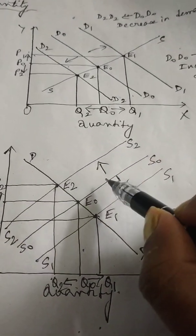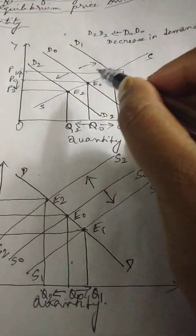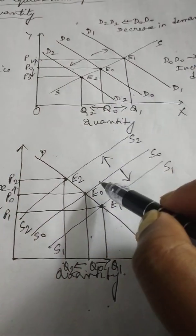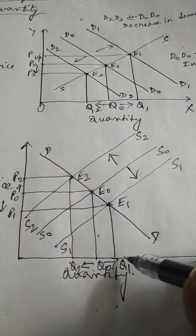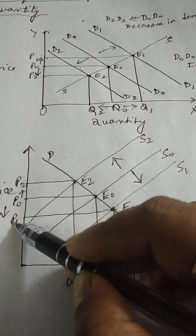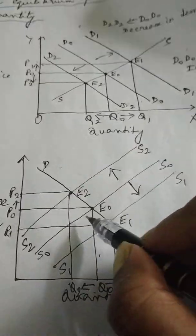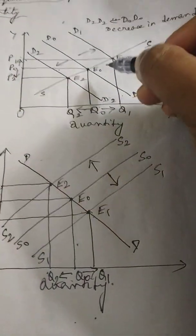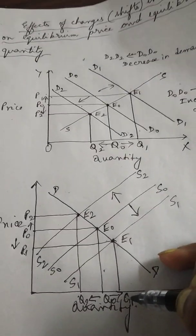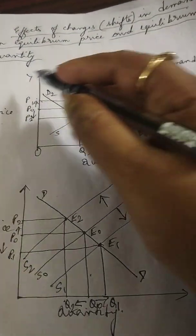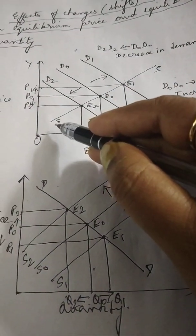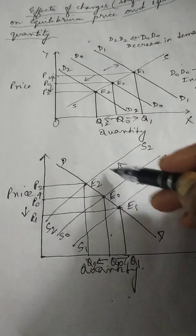You have to remember this — this point is very important: increase in demand increases both equilibrium price and quantity, but increase in supply increases equilibrium quantity but reduces price. Equilibrium quantity increases in both situations — either when demand increases or when supply increases. This is how equilibrium price and equilibrium quantity are affected when either demand changes with supply remaining constant, or when supply changes with demand remaining constant.